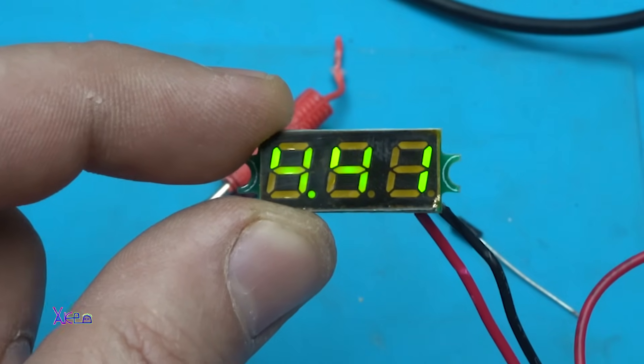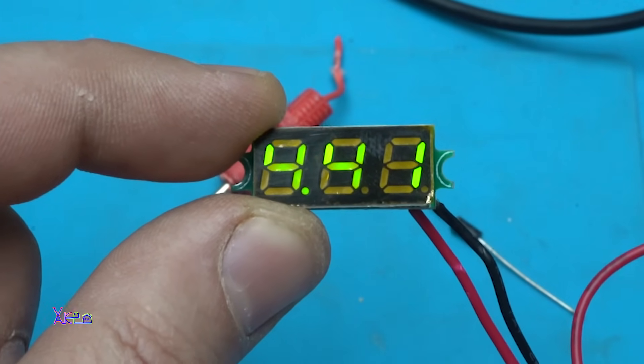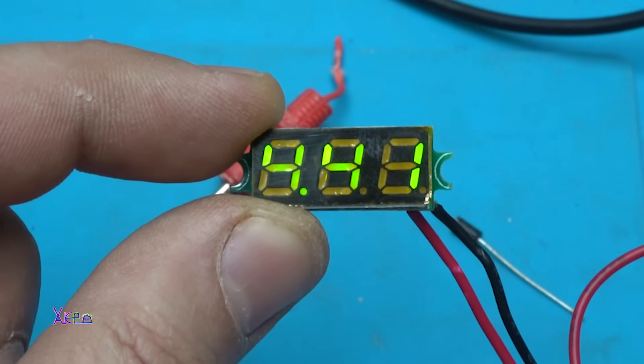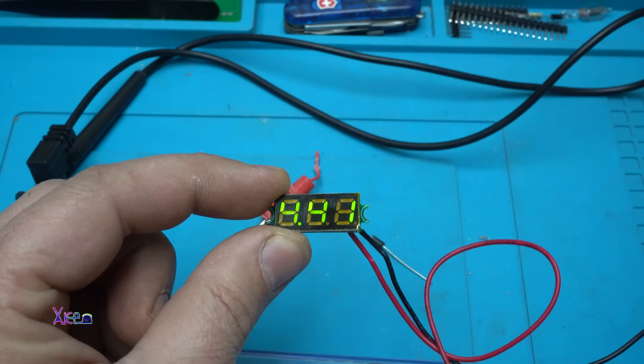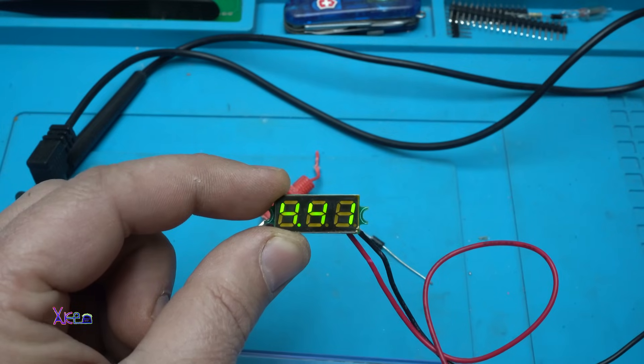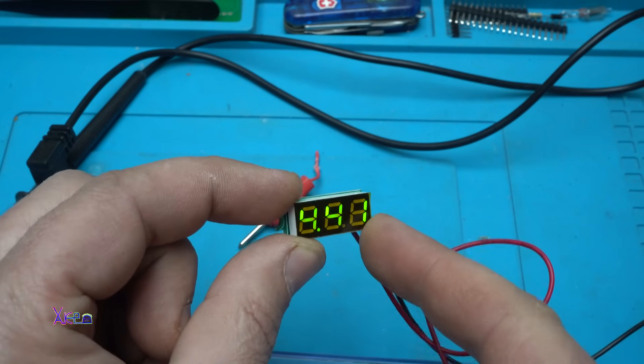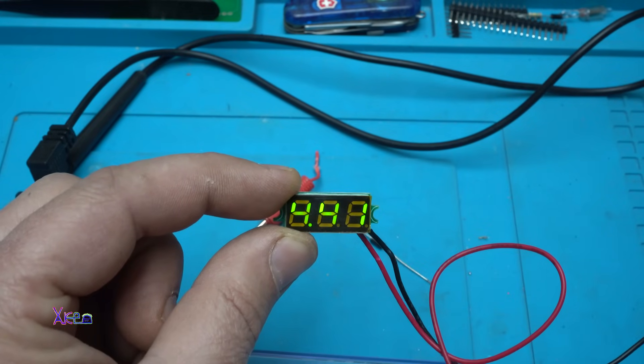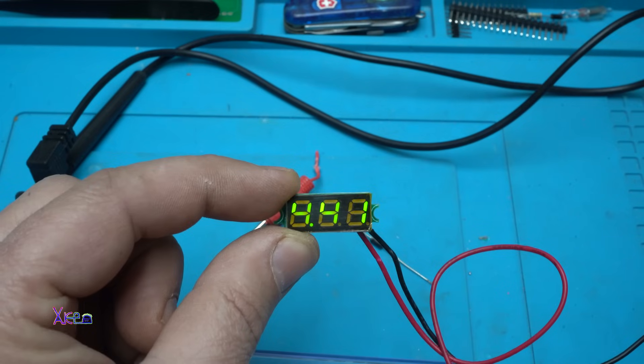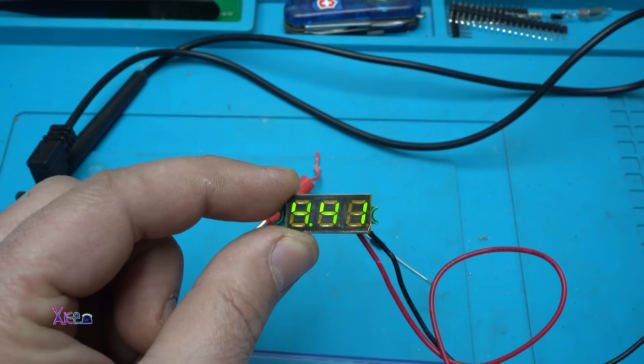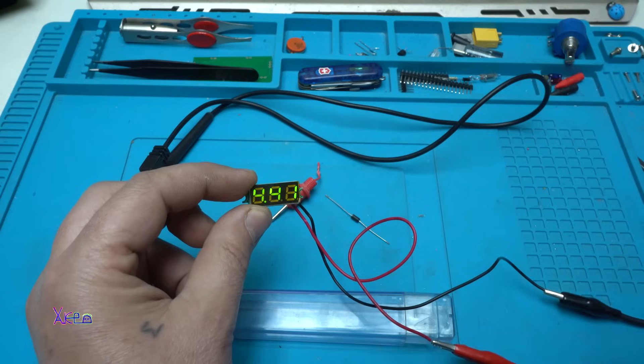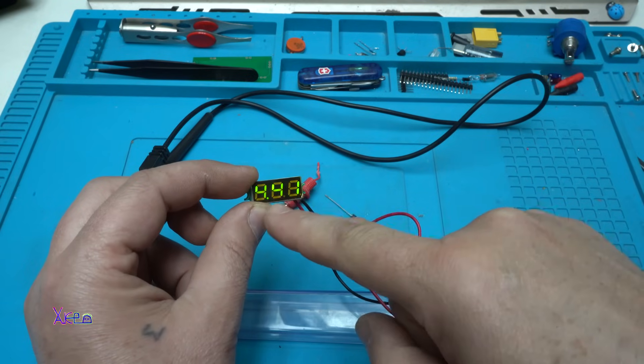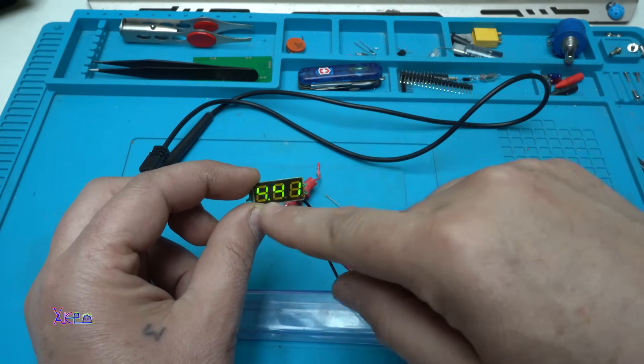Using this tiny LED voltmeter that can measure voltage, this one green from 2.5 volts to maximum 30 volts. You can purchase from AliExpress for around 30 cents. I will make a very cool project. Let's start today's video.